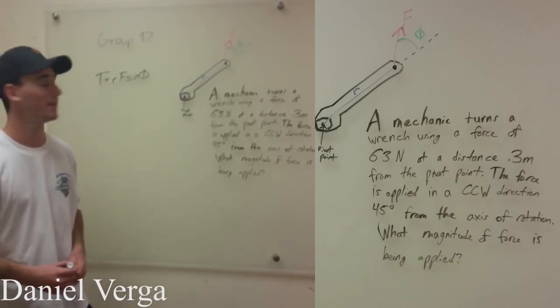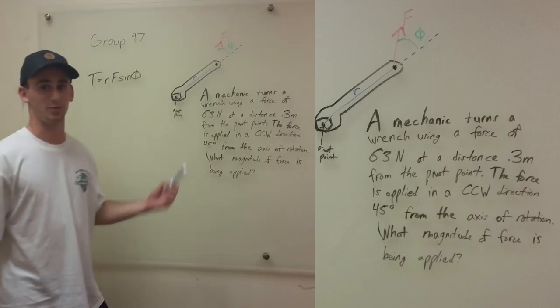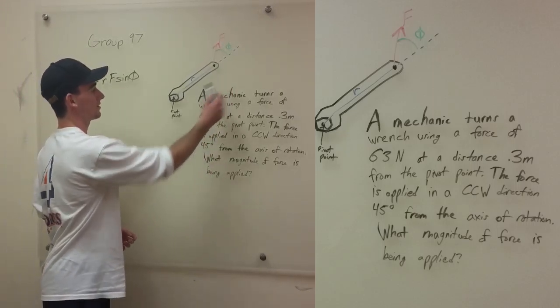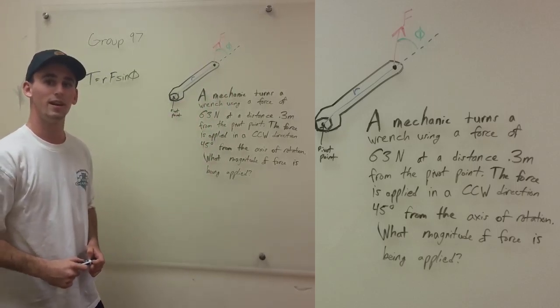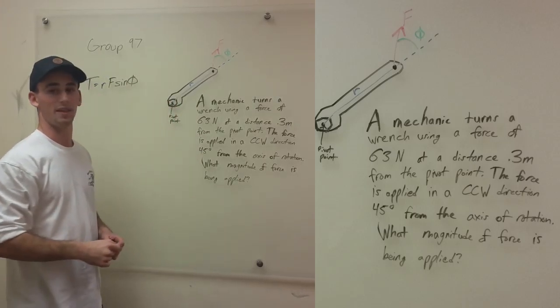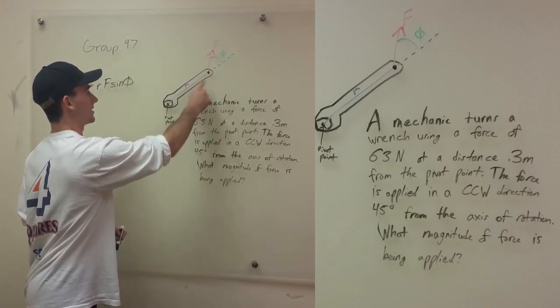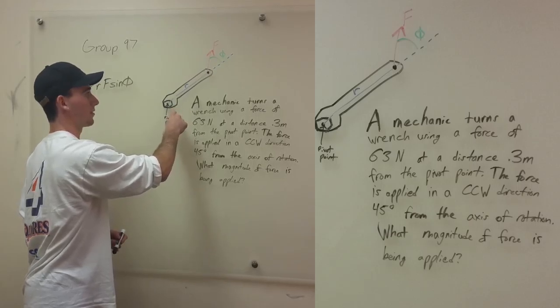What's up class, my name is Daniel, and here we have a classic torque problem. This is a wrench turning a bolt, and so here we have the pivot point, which is obviously going to turn about the wrench, I mean about the bolt, and then you apply the force a distance R from that pivot point.